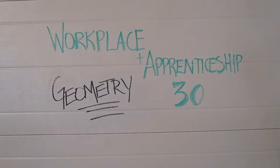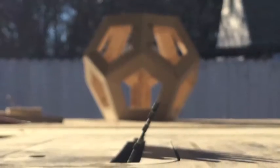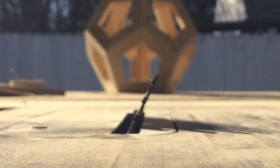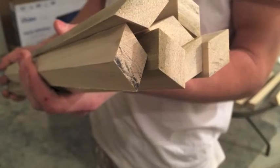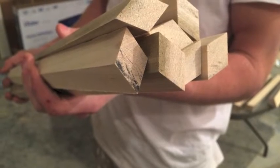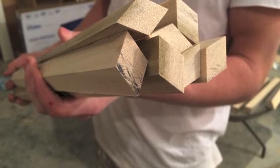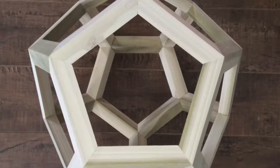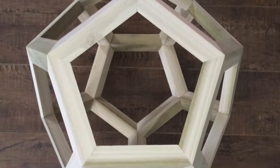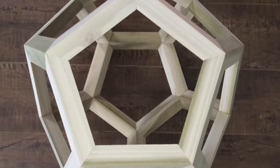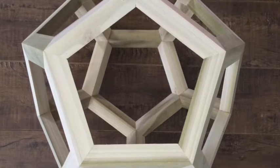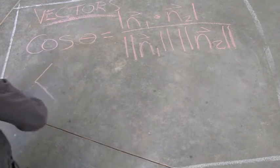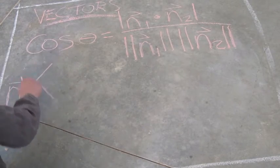First we'll discuss the limitations of measuring instruments as a brief recap from last unit, then we'll consider the historical significance of the dodecahedron, and finally we'll look at the mathematical properties, reasoning, and computations involved in building this amazing object.